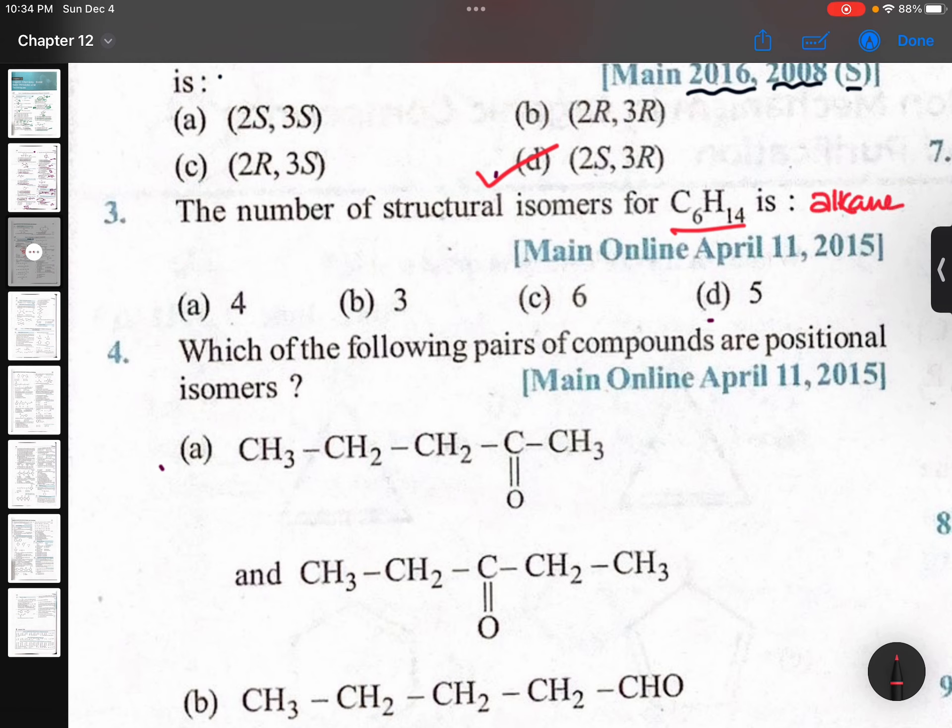For C4H10 there are two forms. C5H12 there are three forms. C6H14 there are five forms. C7H16, C8H18 eighteen, C9H20 thirty-five, C10H22 seventy-five, C11H24 one hundred fifty-nine, so on.